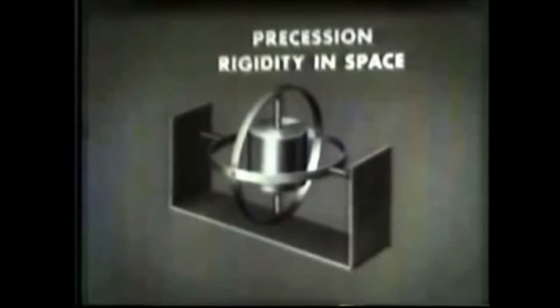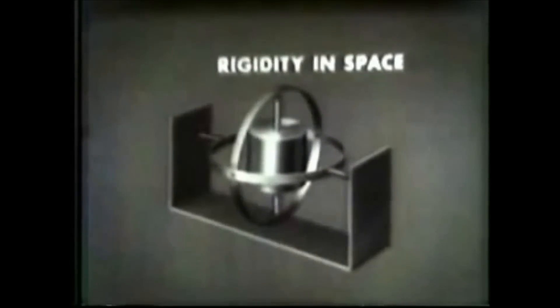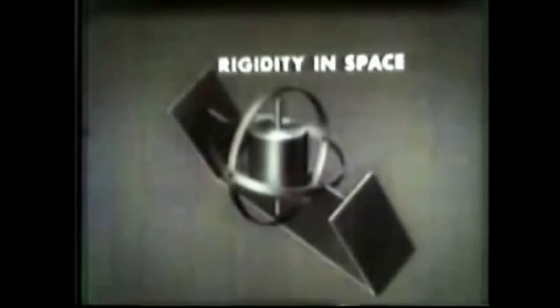This is now a freely mounted gyroscope. A spinning gyro has two important properties: precession and rigidity in space. All of its practical applications are based on these two properties. As for rigidity in space, the spinning rotor remains in its original attitude while the gimbal and base move around it.